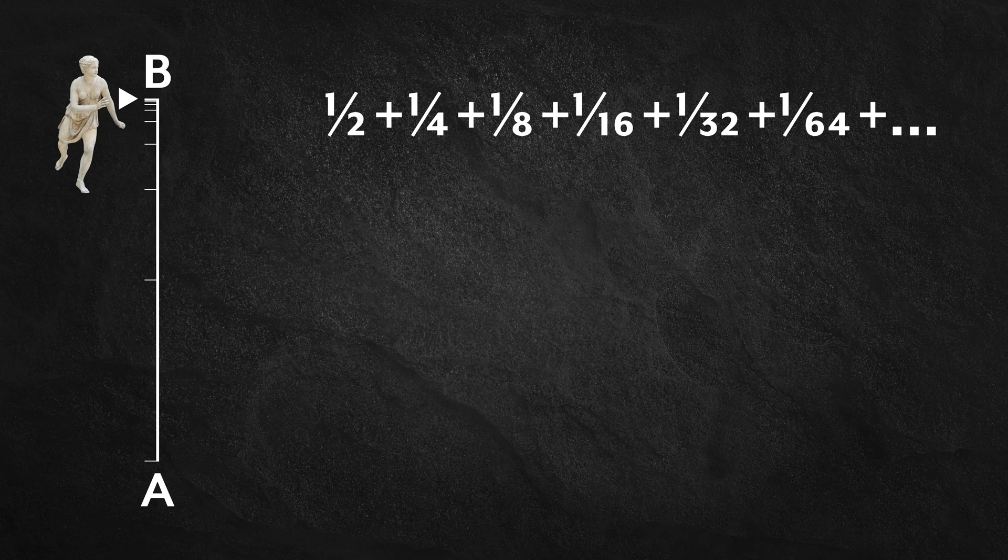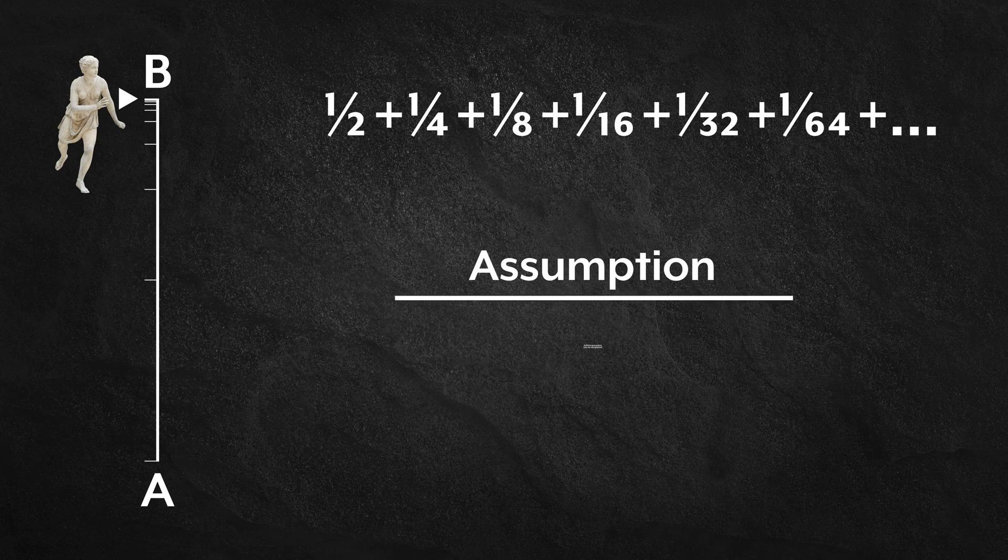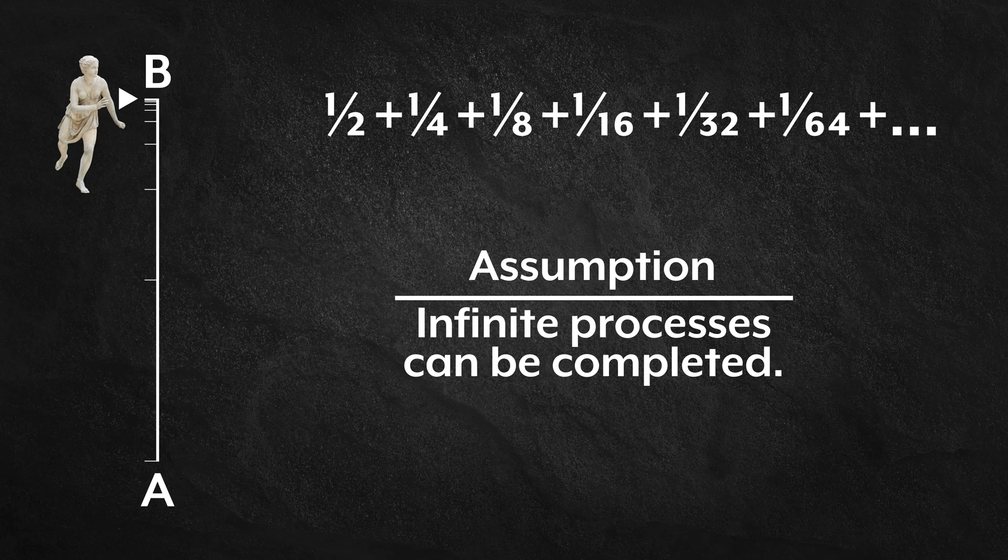To solve this paradox, mathematicians begin with an assumption. We know that motion is possible, we know that Atalanta can travel from A to B, so we assume that the infinite process can be completed, such that this infinite series sums to a number. Let's call it S.